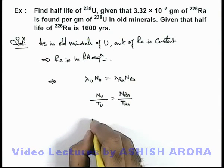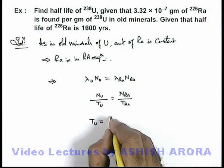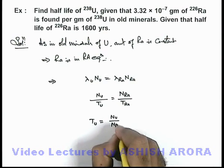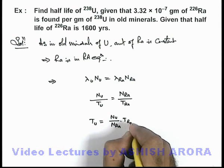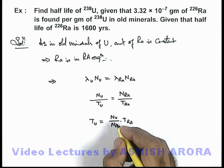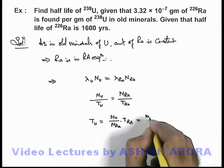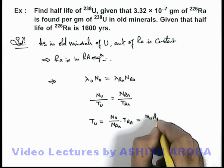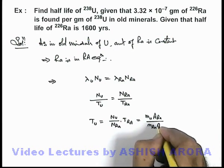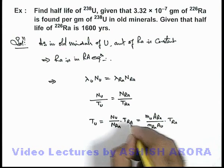So the half-life of uranium can be directly written as: N_U divided by N_Ra, multiplied by T_Ra. The number of nuclei can be calculated from mass and atomic mass, which gives us: (M_U × A_Ra) divided by (M_Ra × A_U), multiplied by the half-life of radium.